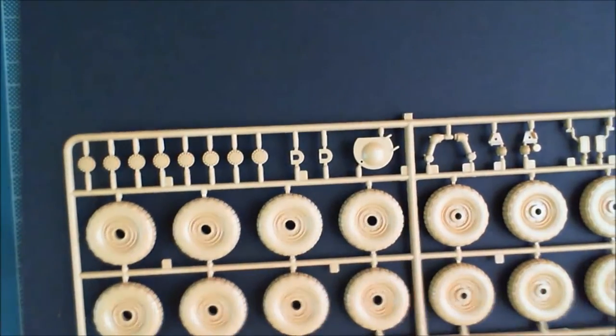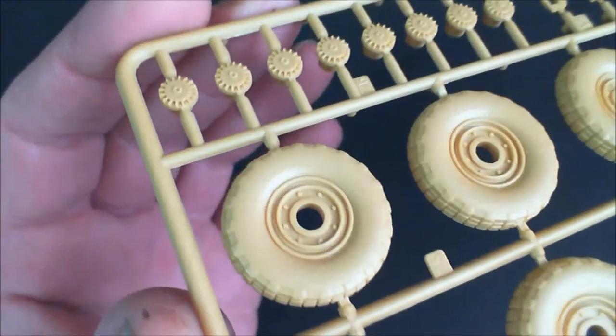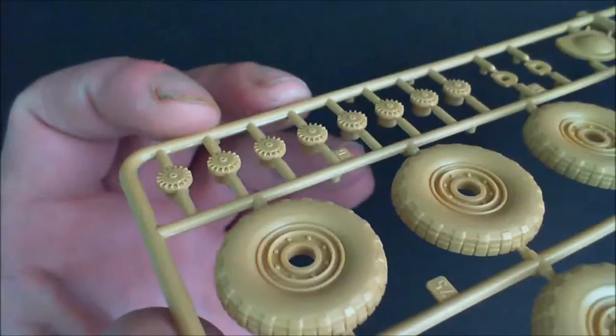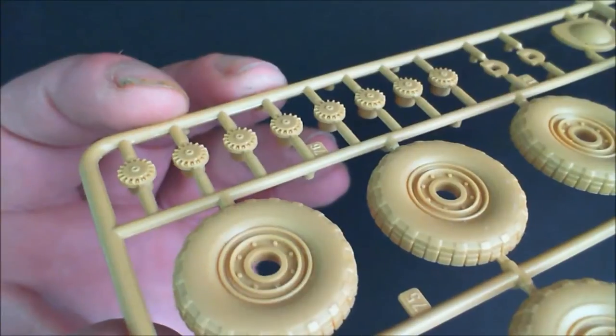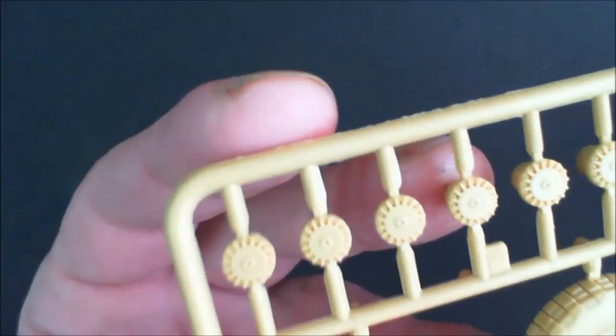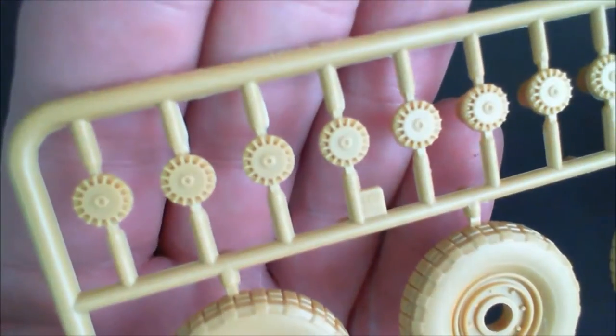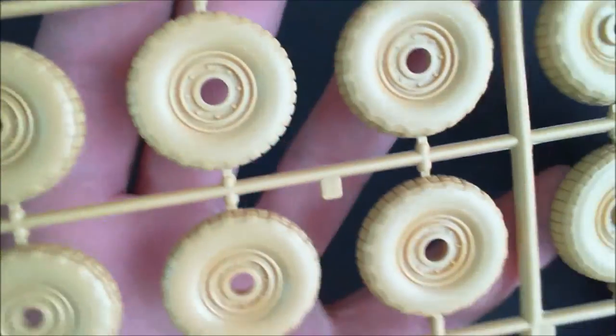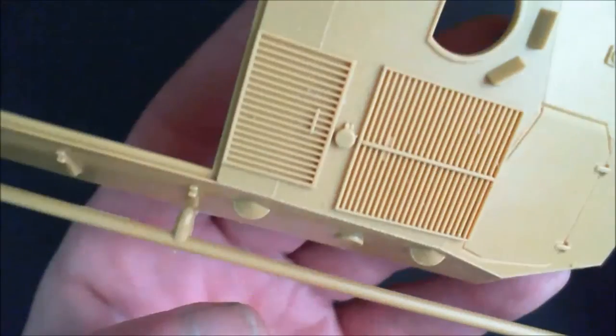The wheels are in two parts, so you're going to have a seam line, a glue line, or whatever you want to call it, a join. But they seem to be okay. A little bit of cleanup when we get them joined should be okay. The bolt detail seems okay as well. And we've got the other half of the wheels, eight wheels on it.